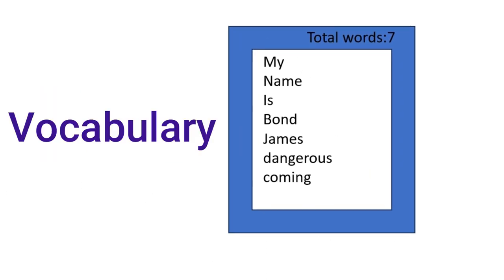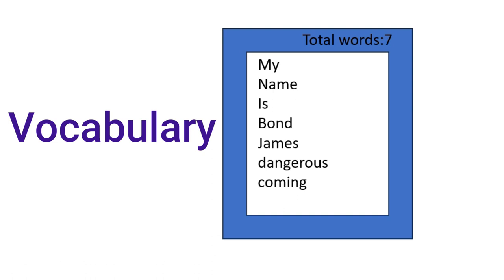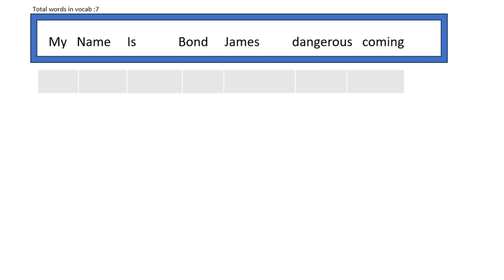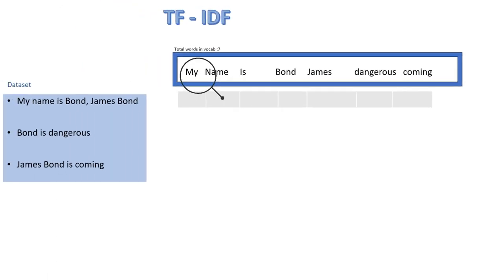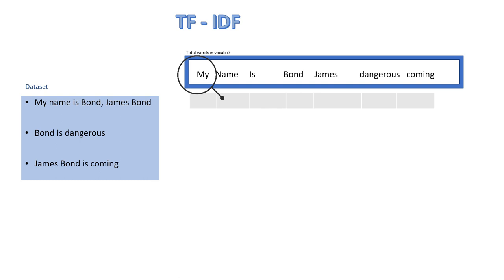Now once we have a vocabulary, we start with the encoding process. First, we start with our vocabulary and search for those words in our sentence. So we start with the first word 'my' and we search it inside our first sentence.